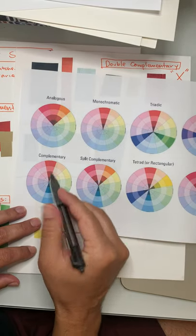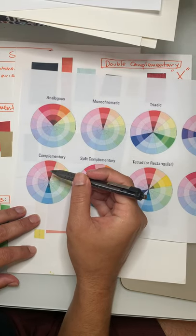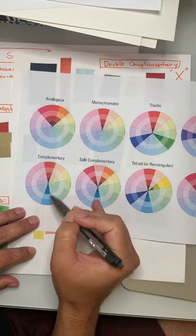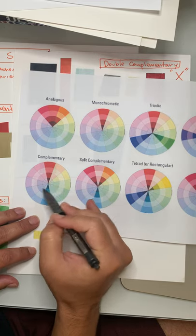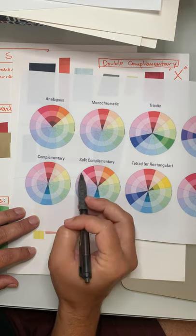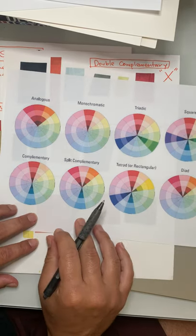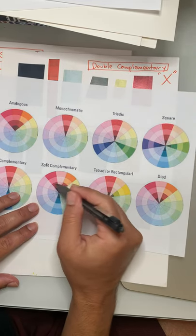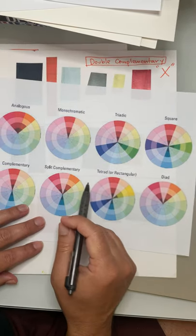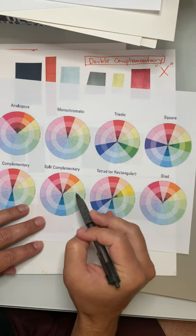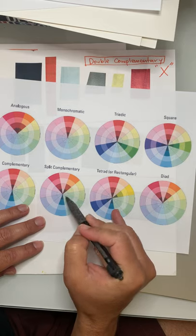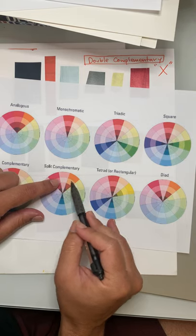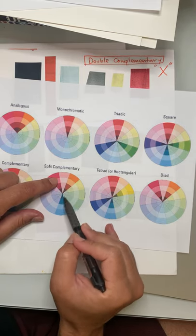Another popular one is complementary — those are colors that sit across from each other on the color wheel, the opposites, which most of you may be familiar with. A perfect example would be the Lakers color scheme, which is purple and yellow. And then split complementary — instead of using the exact opposite, they splice that and use the sides of what might be the opposite.